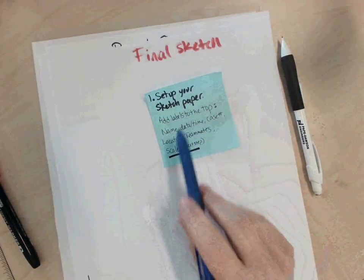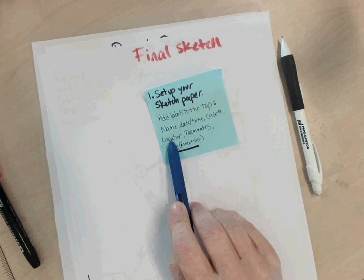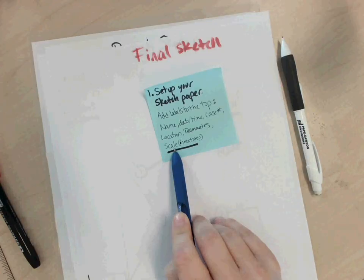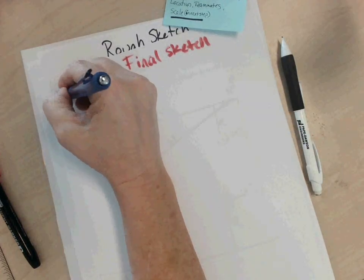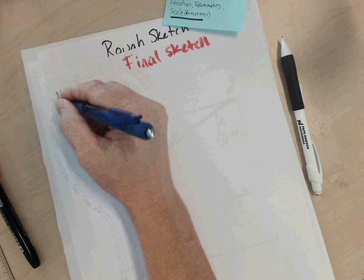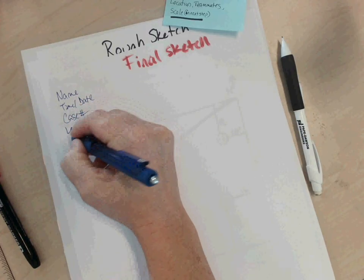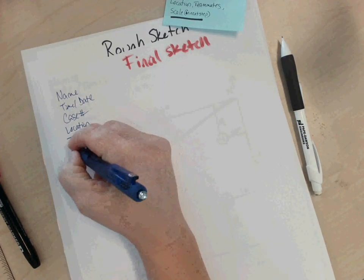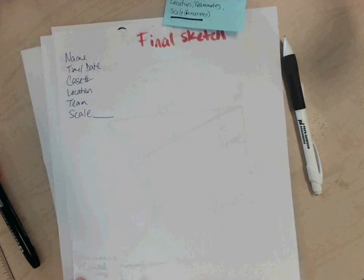So we're going to include the labels at the top. So name, time and date, case number, location, teammates, and then we're going to include something called scale. So I'm going to write that all up here. Name, time, date, case number, location, team, and then scale. So that's what I need on my final sketch.